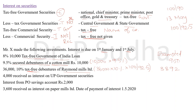Next: 4,000 received as interest on UP government securities. UP government is state government, so this is a less-taxed government security — taxable, with no grossing up required. Write 4,000 rupees in the amount column. Next: interest on post office savings account. 'Post office' is a keyword for tax-free government security, so this is a tax-free government security — an exempted income. Write 'exempted' in the amount column.